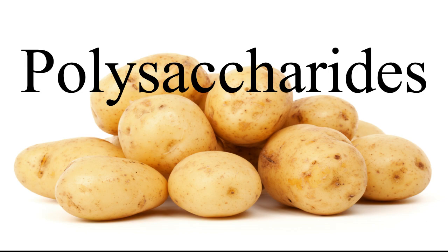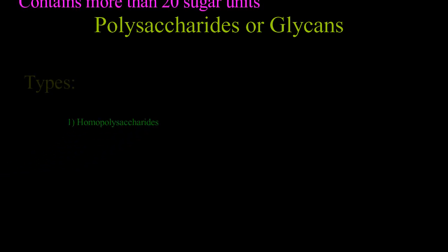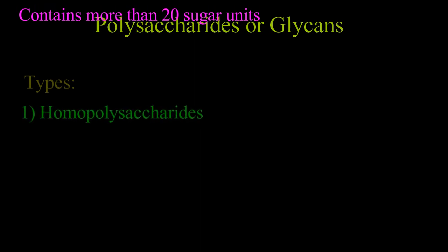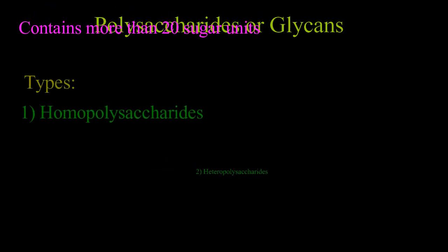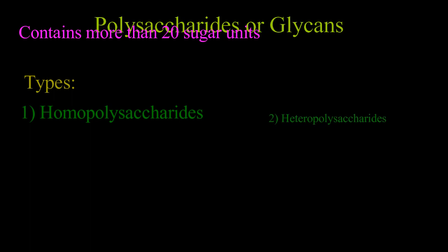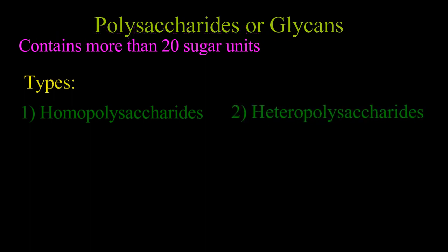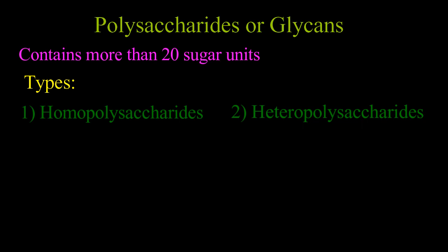Polysaccharides or glycans contain more than 20 sugar units. They may be homopolysaccharides or heteropolysaccharides. Homopolysaccharides contain only one type of monomer, while heteropolysaccharides consist of two or more different monomers.